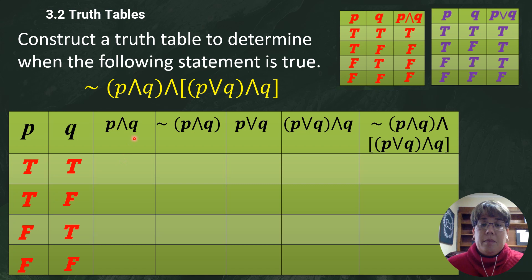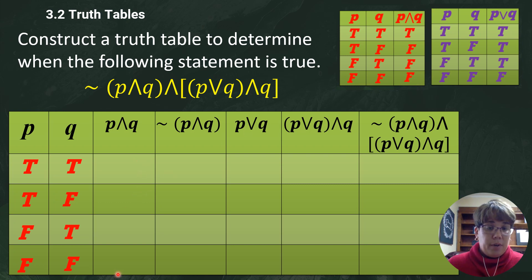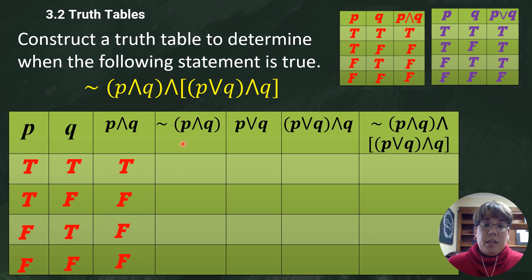For p it's true, true, false, false; q is true, false, true, false — that's the same every time. Then I'm going straight to the AND chart and copying that column down. The reason I'm doing this is because I'm going to start and work my way across this problem. I want to know what p AND q is because it's in parentheses, so I'll do that in this column.